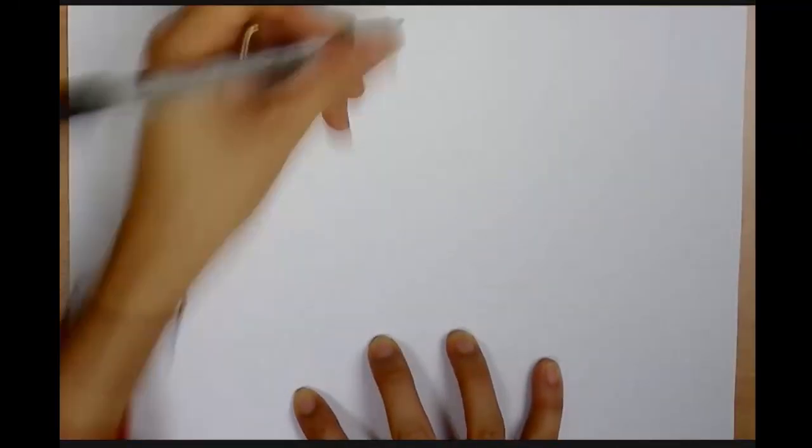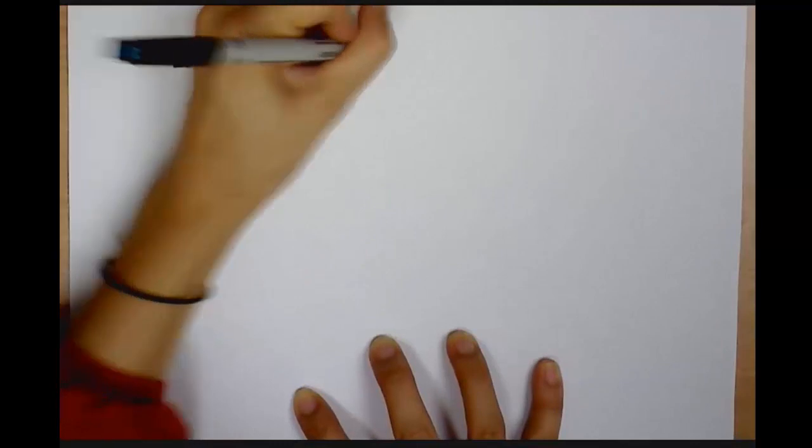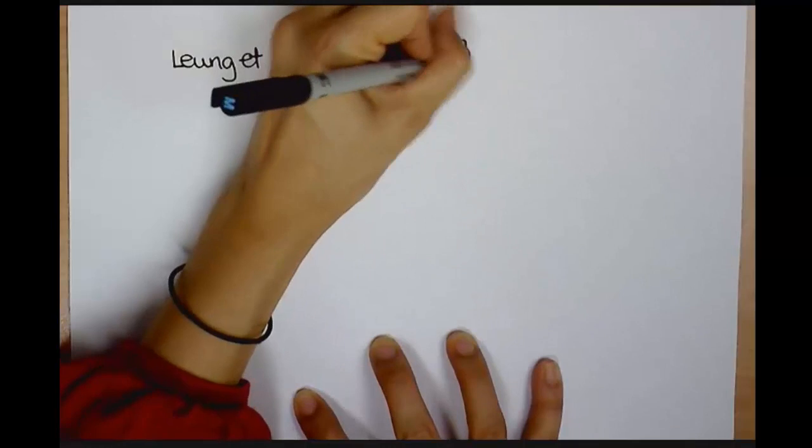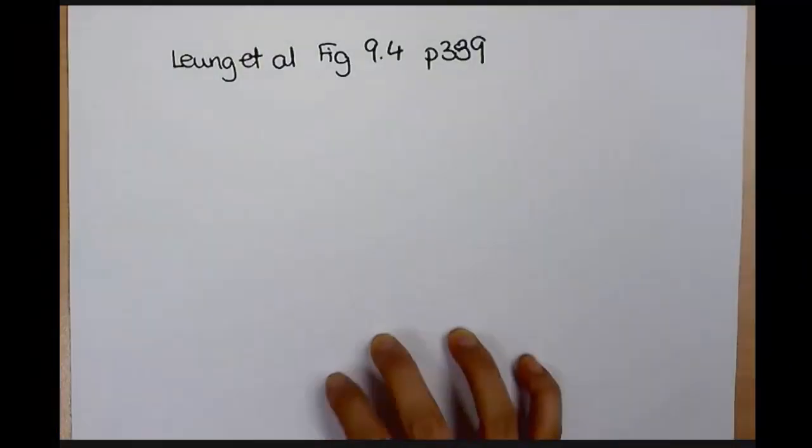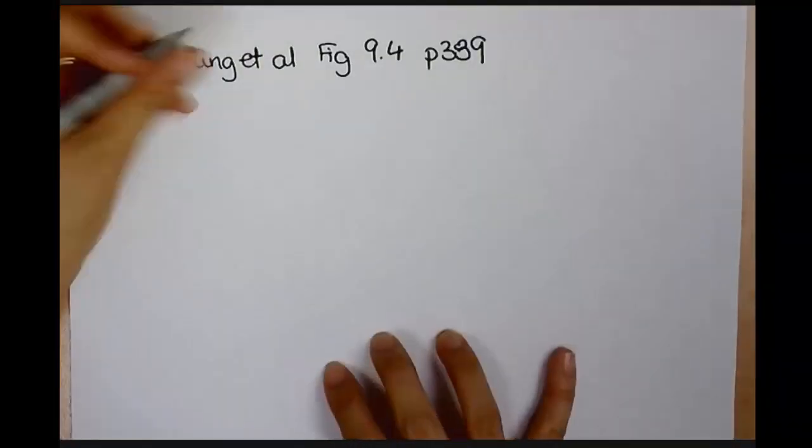So if you're looking at the Leong textbook, the fifth edition, then I'm looking at figure 9.4 on page 389 and the first thing I want to talk about is the basic flowchart shapes.